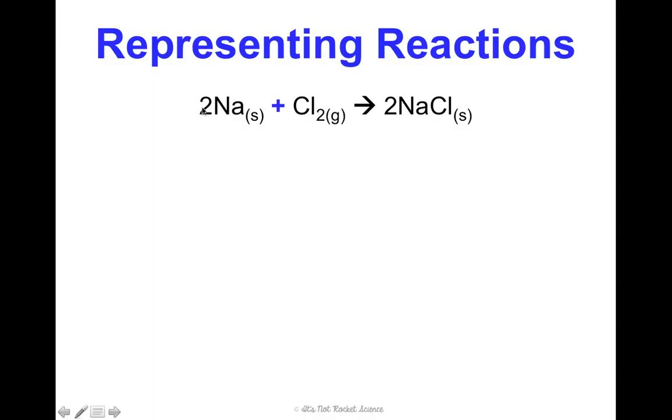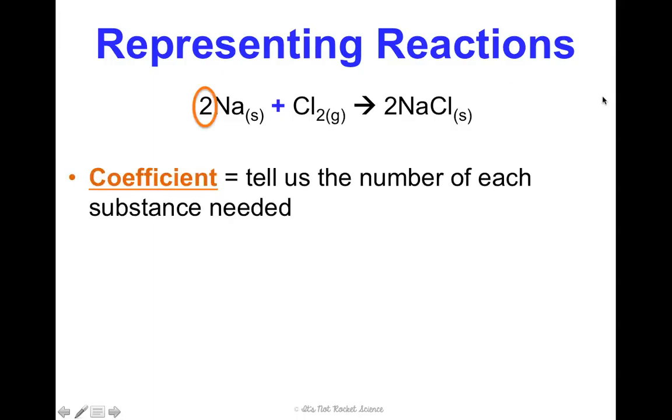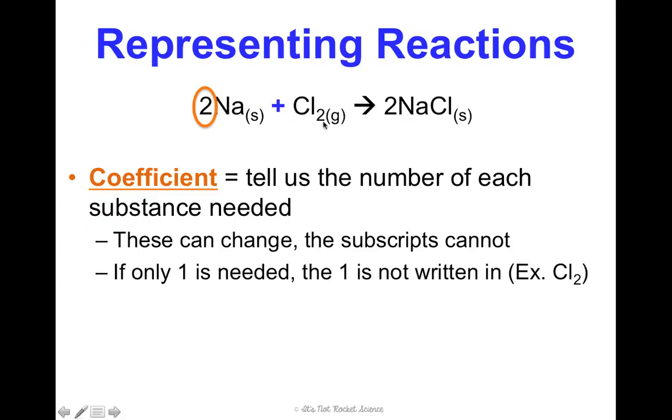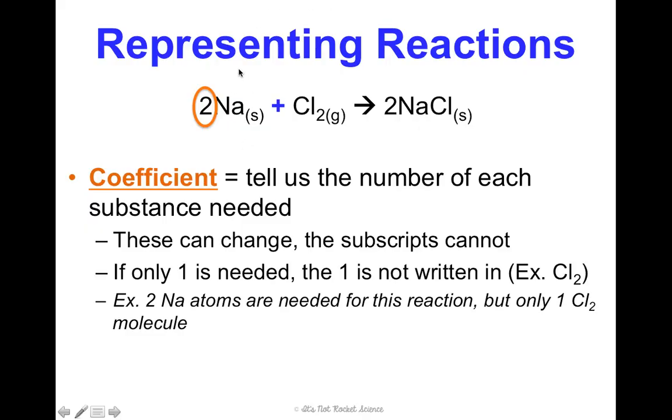Next, you may have noticed that there are some larger numbers in front of the elements or the compounds, which are different from my little subscripts. That is a coefficient. It tells me the number of each substance needed. These can change. Subscripts cannot. So I can put a coefficient in front of Cl2, but I cannot change the two. If I only need one of a substance, a one is not written. So this is saying two sodium atoms are needed for this reaction, but only one chlorine gas molecule. It's really more of a ratio. This is a two to one ratio. I need twice as much sodium as I need chlorine to make this happen.